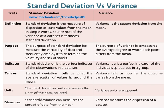Standard deviation units are the same as the units of the data. Whereas variance units are squared.